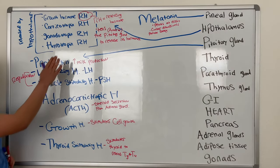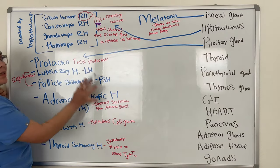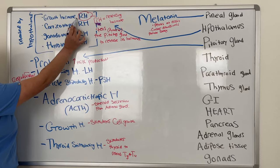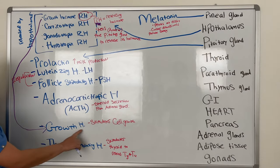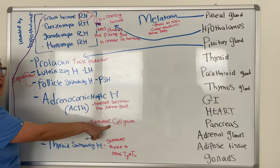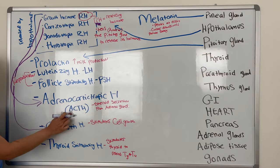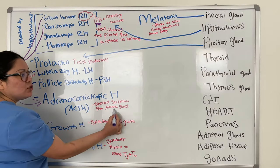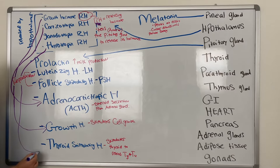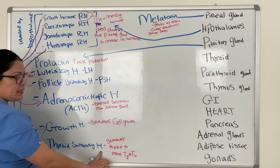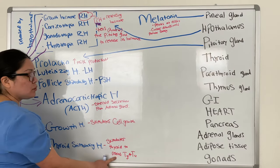Remember I said the hypothalamus has releasing hormones that tell the pituitary gland to release its hormones — here's how it works. Growth hormone releasing hormone tells the pituitary to release growth hormone, which stimulates cell growth. Corticotropin releasing hormone tells the pituitary to release ACTH, which tells the adrenal glands to release steroids. Thyrotropin releasing hormone tells the pituitary to release thyroid stimulating hormone, which then stimulates the thyroid to release T3 and T4.